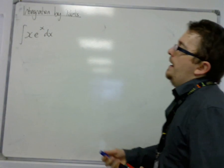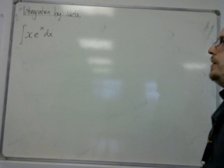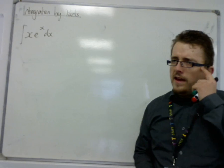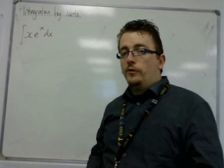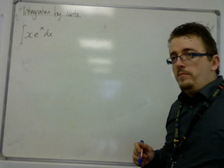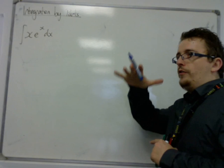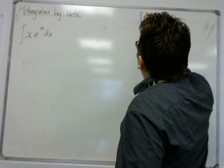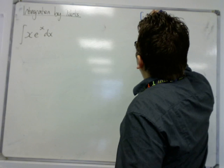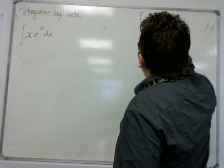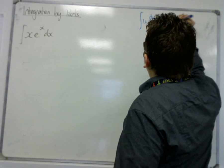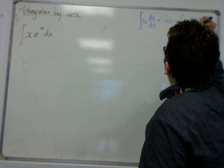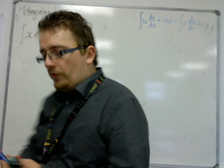What we need to know is that in the formula booklet for AQA, there is the actual integration by parts formula. It's not named that way, but it is under the integration section, and it tells you that the integral of u dv/dx is equal to uv, take away the integral of v du/dx dx. So this is what's given to us.